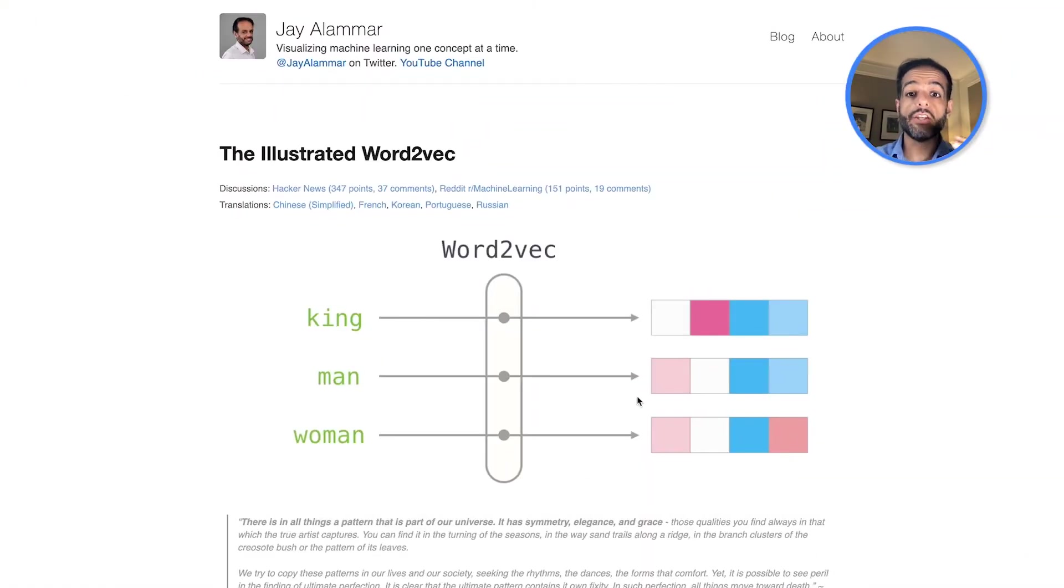So I'm happy to give you a guided tour of this blog post. It's one of the most visited blog posts on my blog, and it's for a fundamental concept. It talks about word embeddings, establishes them, and it talks then about the Word2Vec algorithm. It's still being used, but the concept of embeddings is used way more than just what Word2Vec does.